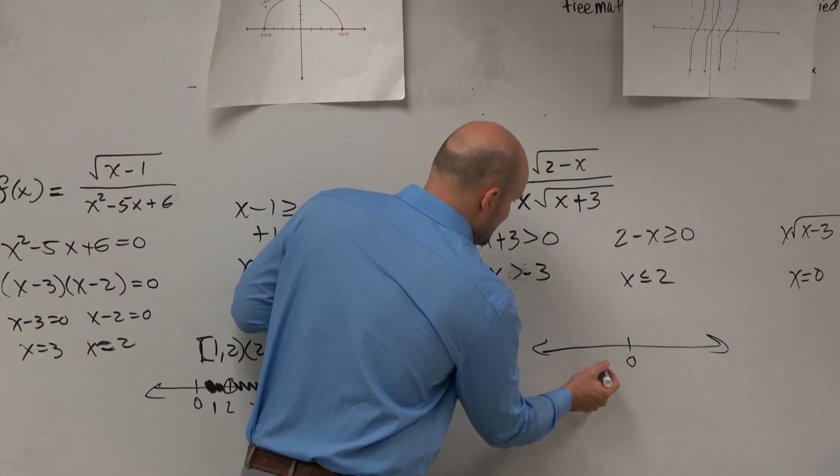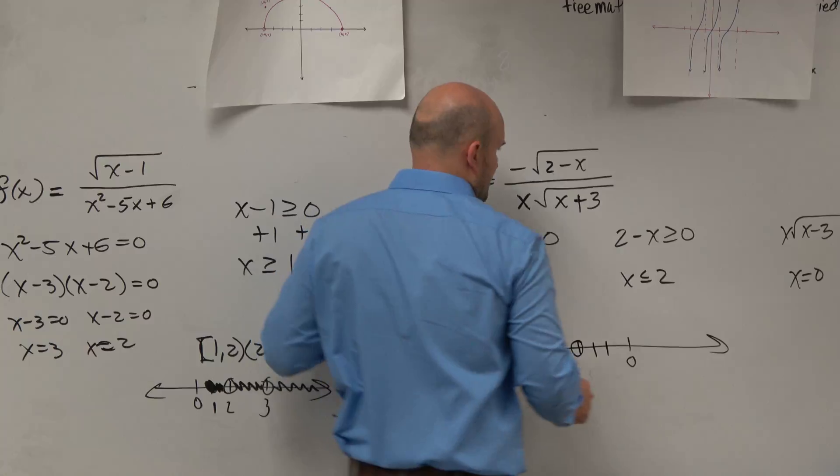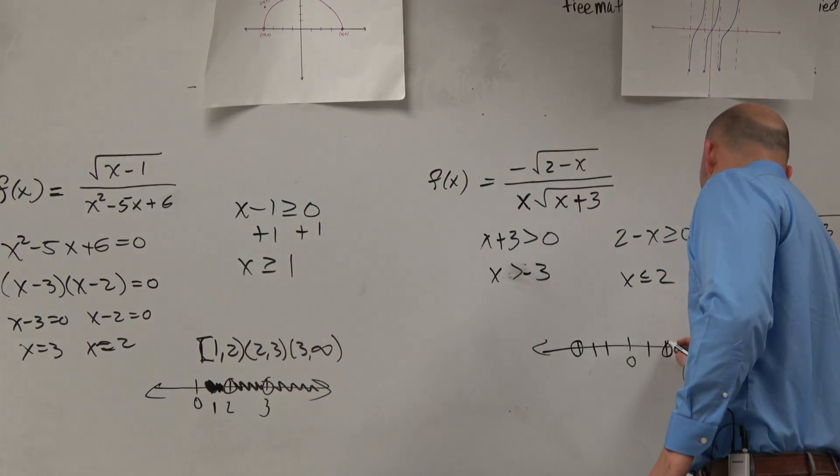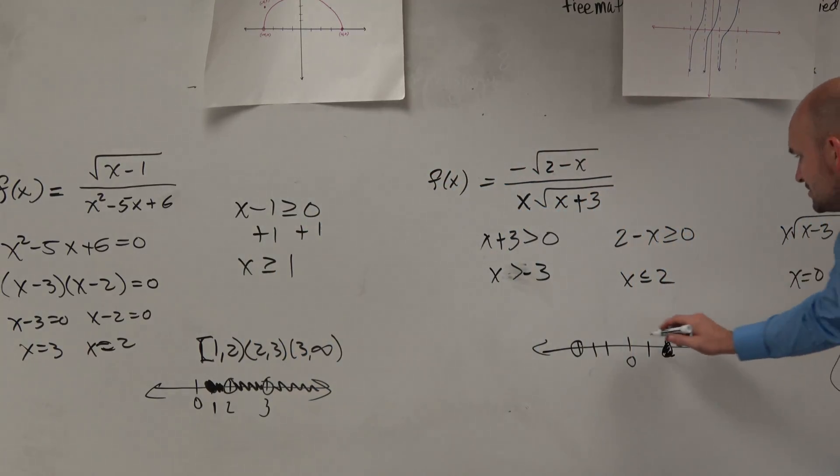So if I go to zero, that's supposed to be 1, 2, 3, negative 3. And then go to 2. That's enclosed. But then it also cannot equal zero.